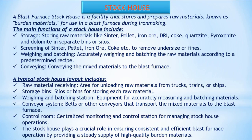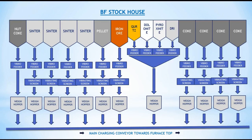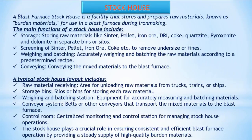Storage: storing raw materials like sinter, pellet, iron ore, DRI, coke, quartzite, pyroxenite, and dolomite in separate bins or silos. Screening of sinter, pellet, iron ore, coke, etc., to remove undersize or fines. Weighing and batching: accurately weighing and batching the raw materials according to a predetermined recipe. Conveying: conveying the mixed materials to the blast furnace.